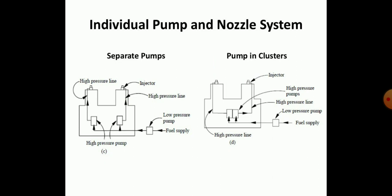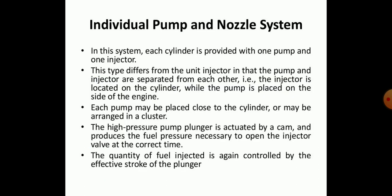The individual pump and nozzle system, with separated pump and injector, can be seen on your screen. In this system, each cylinder is provided with one pump and one injector. This differs from the unit injector in that the pump and injector are separated from each other — the injector is located on the cylinder while the pump is placed on the side of the engine. Each pump may be placed close to the cylinder or arranged in a cluster. The high pressure pump is plunger-actuated by a cam and produces the fuel pressure necessary to open the injection valve at the correct time. The quantity of fuel injected is controlled by the effective stroke of the plunger.